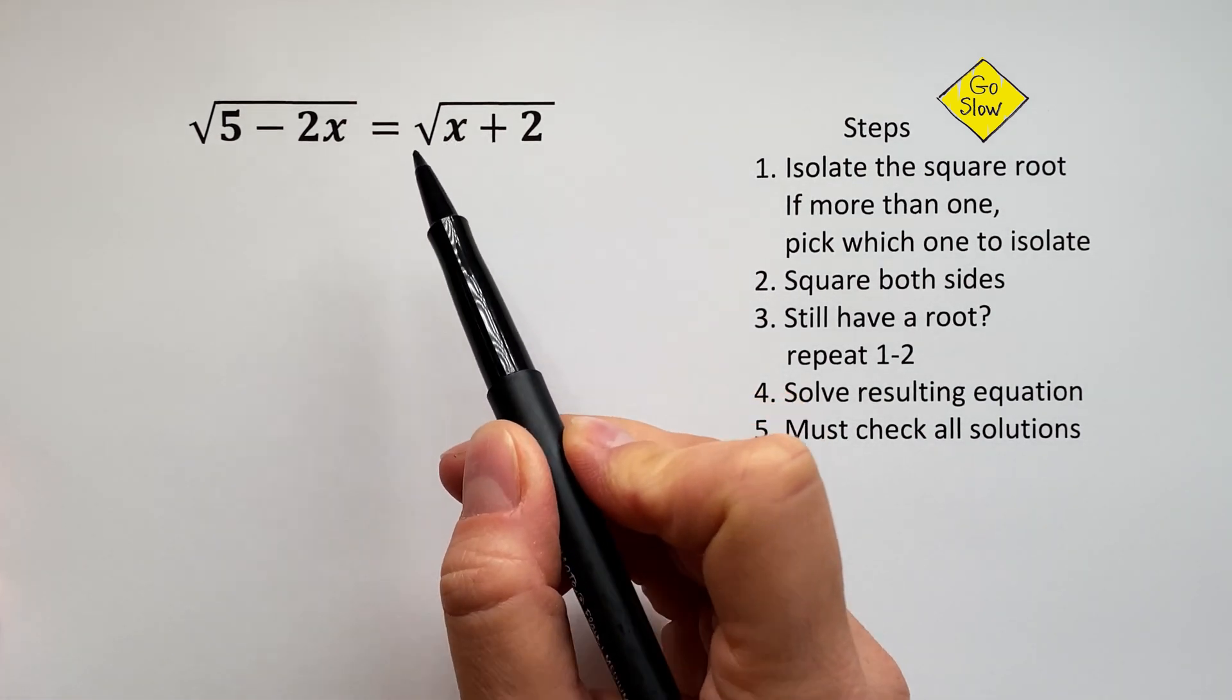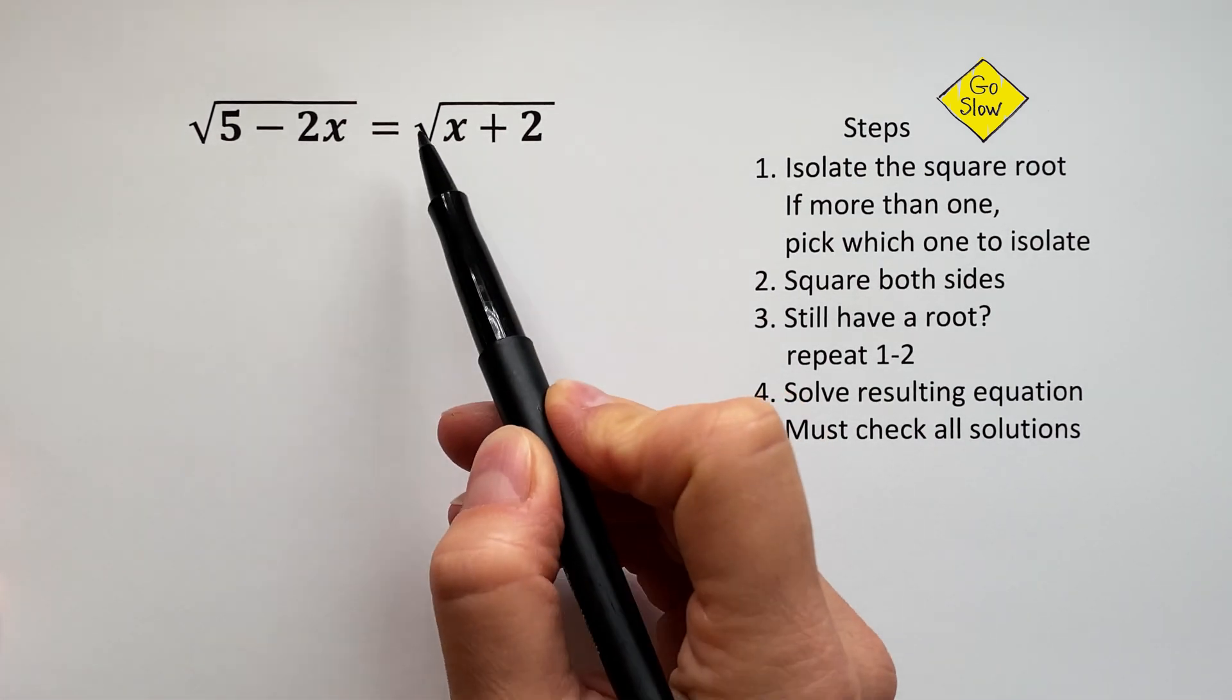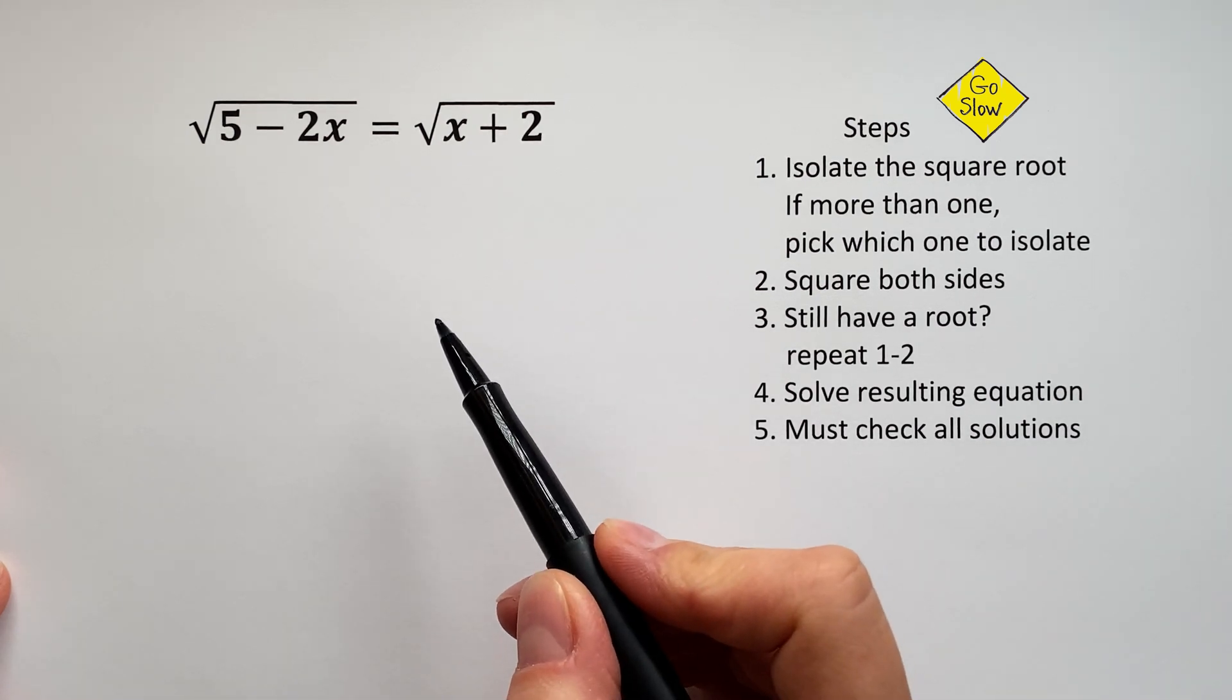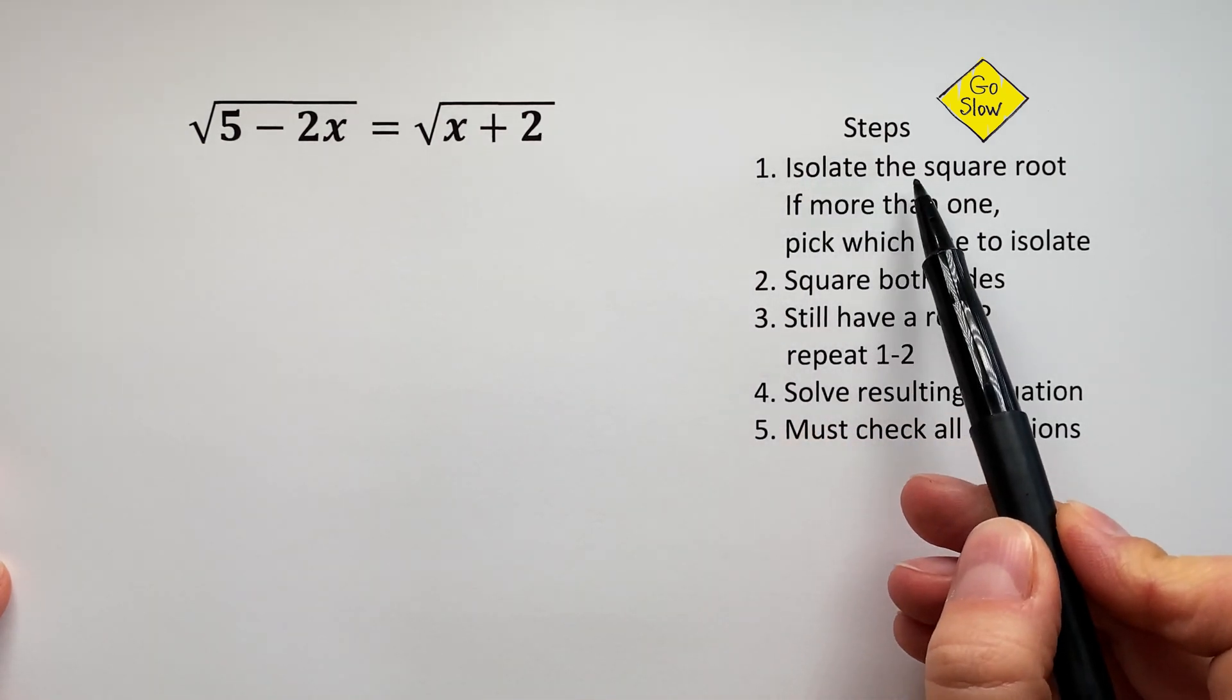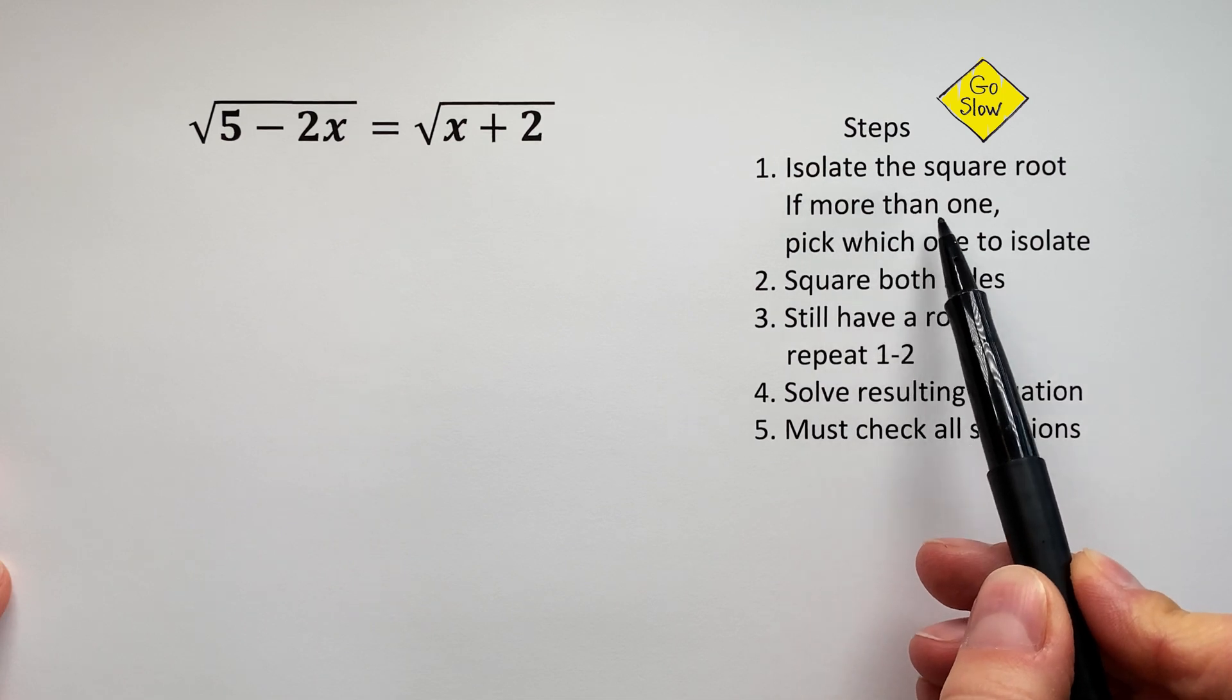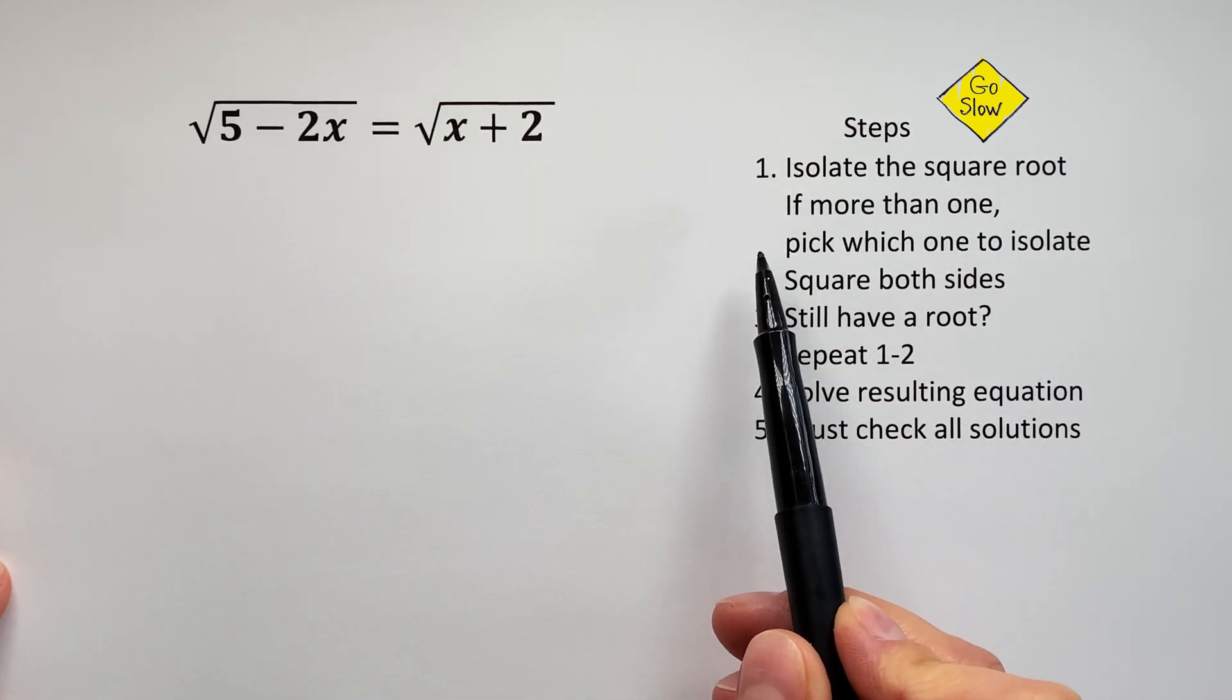To find X, first we need to get rid of these two square roots. Let's look at our steps. The first step is isolate the square root. If more than one, pick which one to isolate.